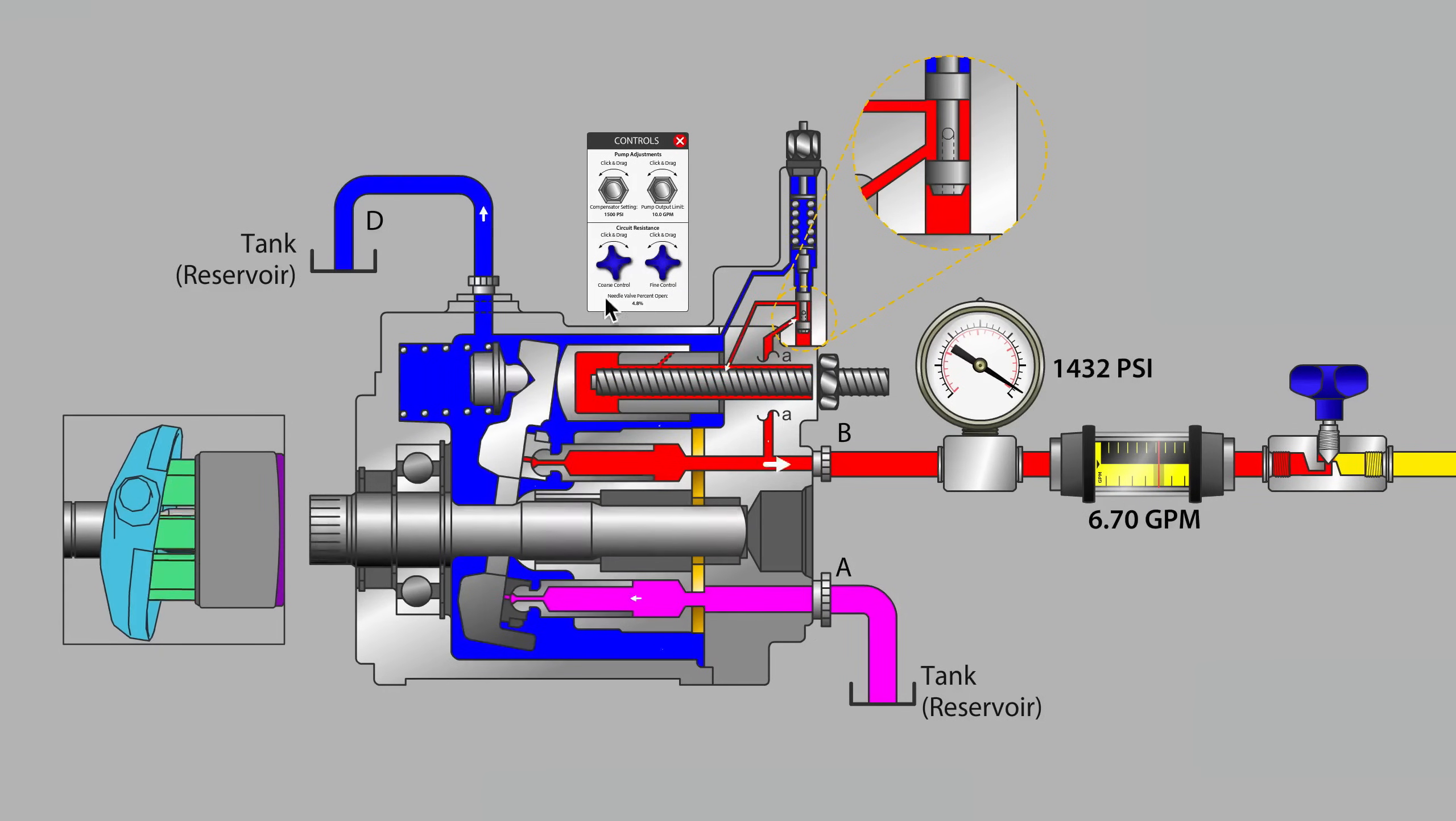In addition, blocked case drain line will cause our pressure compensator function to misbehave or cease entirely. The malfunction may be no pressure compensate function is available. So again the pump could easily move to a catastrophic state without maintaining case drain flow.